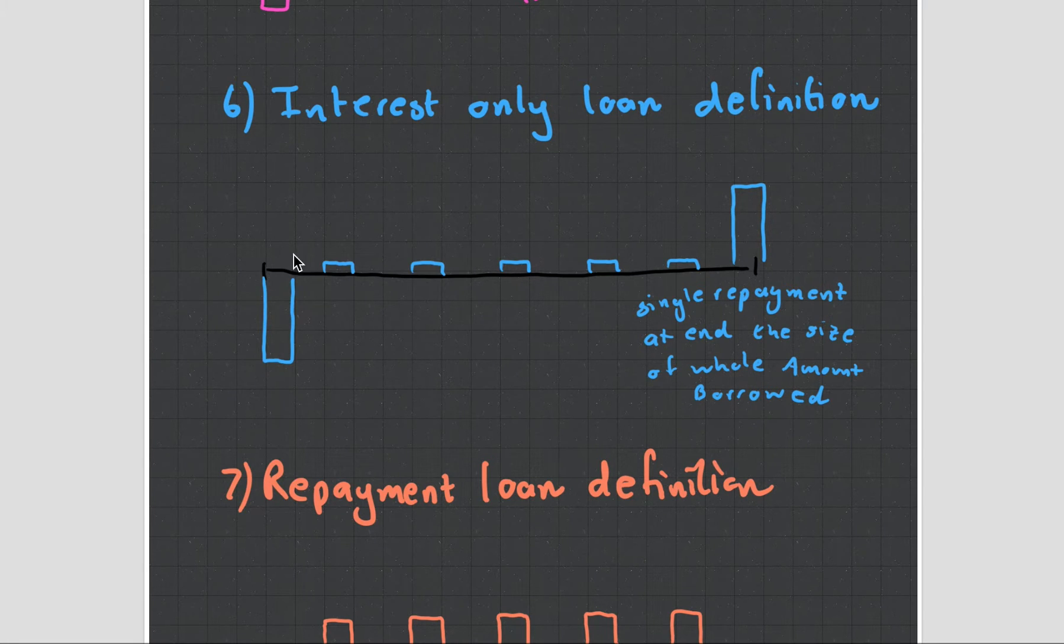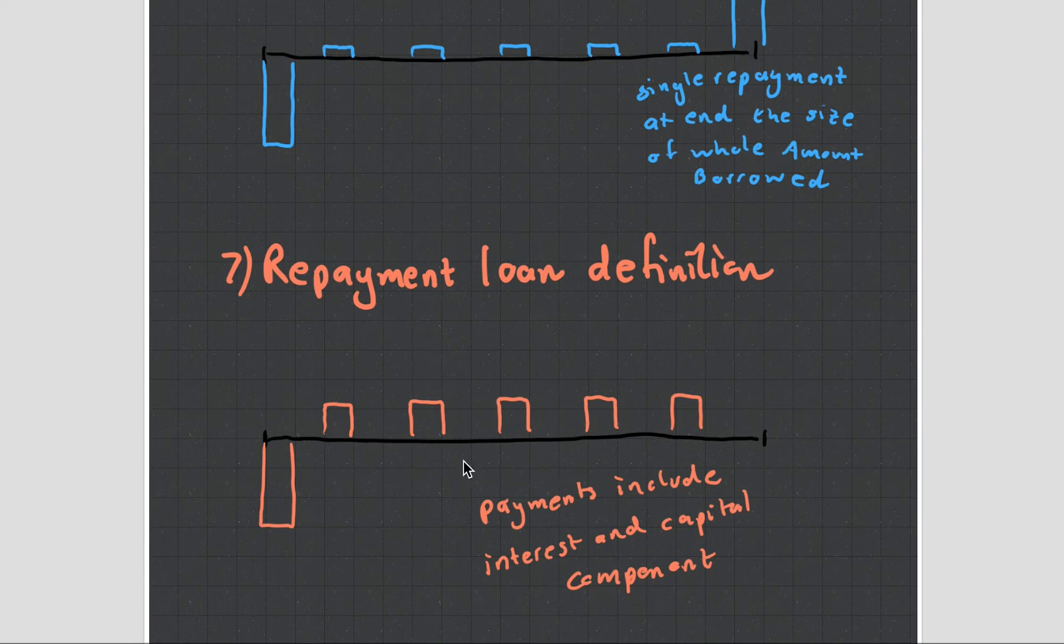That works a little bit differently to a repayment loan. So here, you lend $10, but instead of getting $1 back, $1 back, the payments consist of an interest and a capital component. So you're getting maybe $2, $2, $2, $2, $2, $2. And the $1 covers the interest, and the other dollar covers the capital repayment. But that's a very crude example.